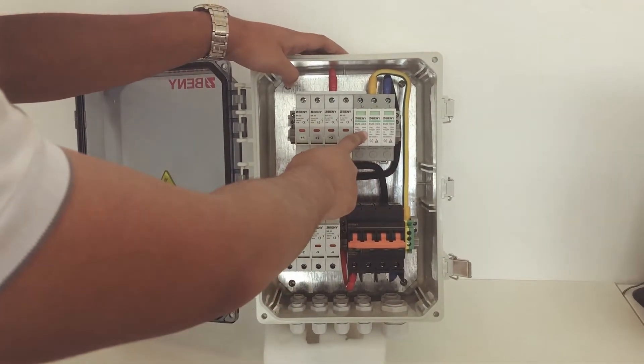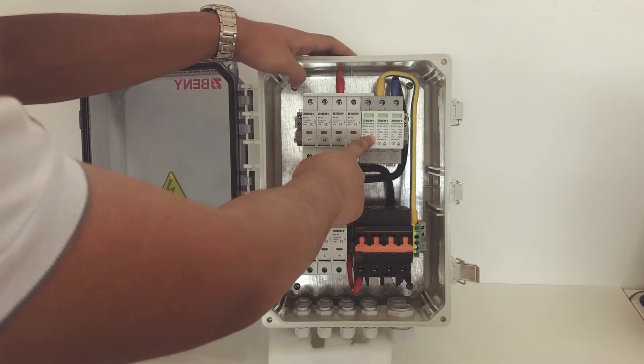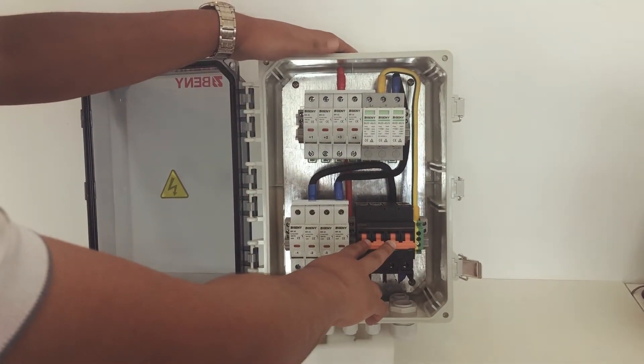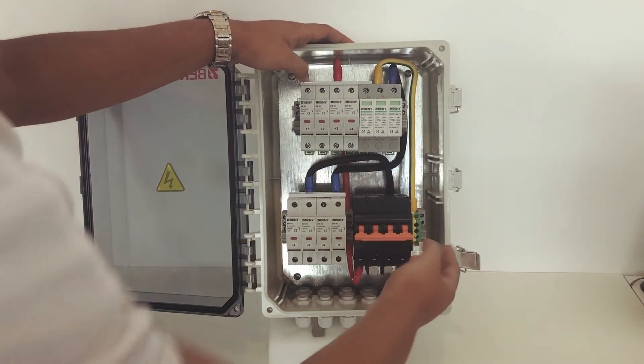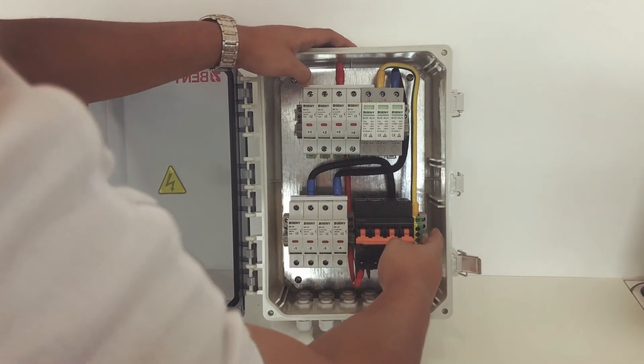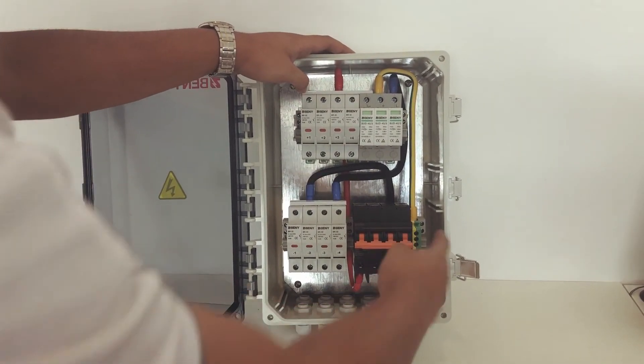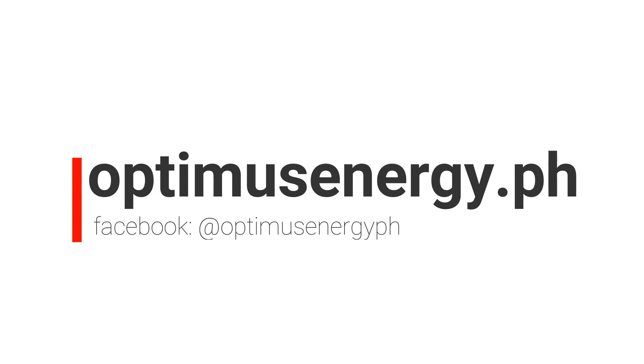This is the SPD or the surge protection device. This is the DC isolator switch. And the last thing, this is the ground or the earthing terminal. Thank you very much.